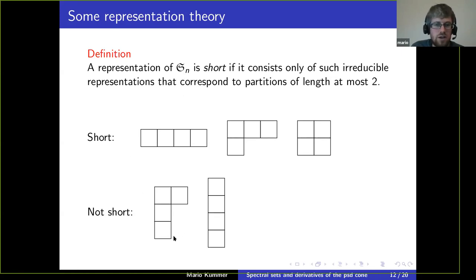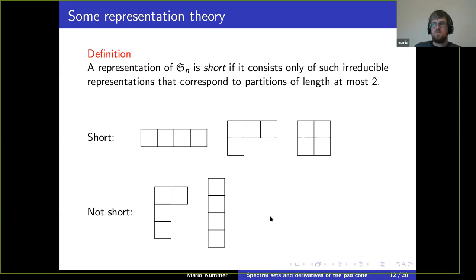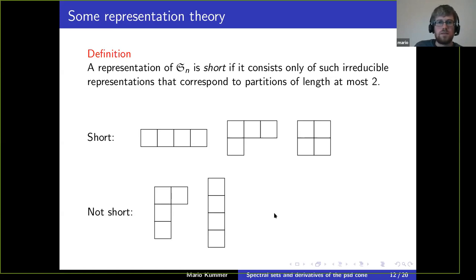For n equals four, these three are short representations: the partition (4), then (3,1), then (2,2) — all short because they have at most two summands in the corresponding partition. The partitions (2,1,1) and (1,1,1,1) are not short.